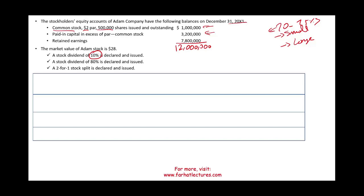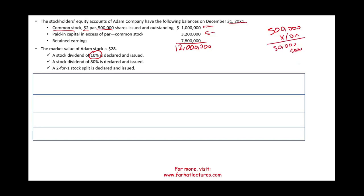I'm going to start with a small dividend to illustrate the concept. Right now we have 500,000 shares outstanding. If we are issuing 10% new shares, that's going to be an additional 50,000 shares. How much are we going to capitalize retained earnings — in other words, reduce retained earnings by? If it's a small stock dividend, we use the market value. So we're going to reduce retained earnings by the number of shares times the market value of $28, which gives us 1.4 million.